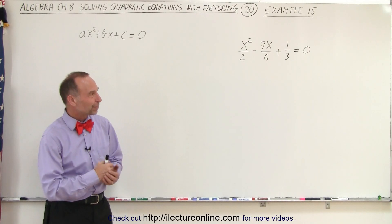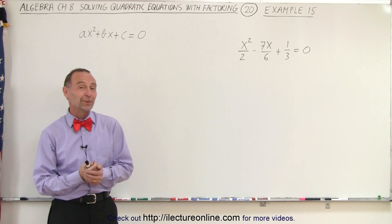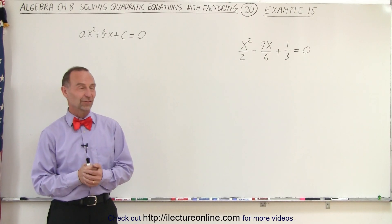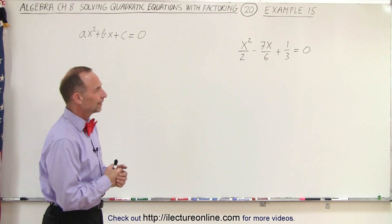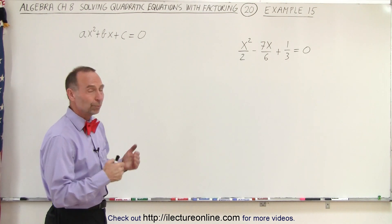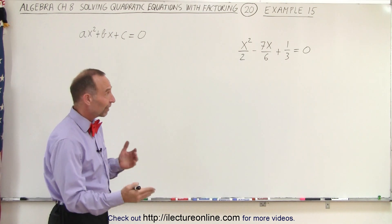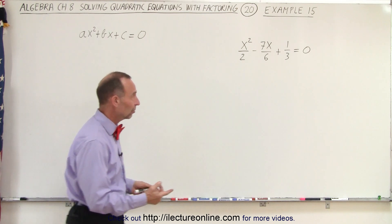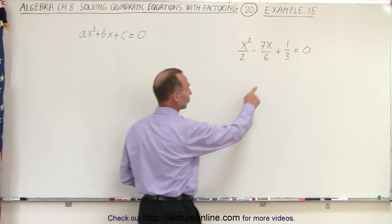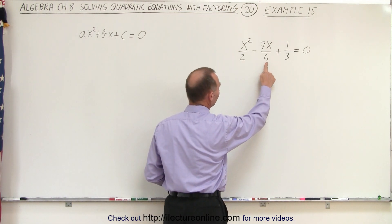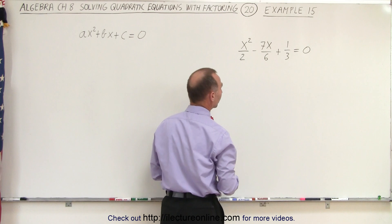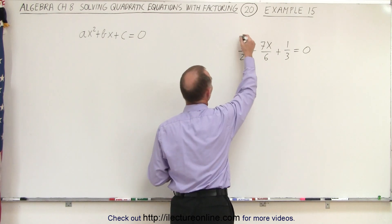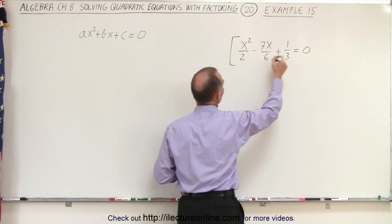Welcome to our lecture online. Our next example has fractions. And what do we do with those? We could multiply both sides of the equation by the lowest common denominator. In this case, the largest denominator, 6, is the lowest common denominator of all 3, which means we can multiply the left side by 6.